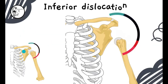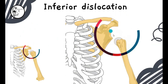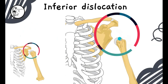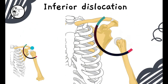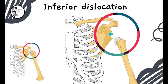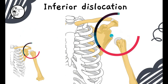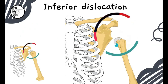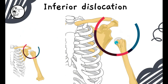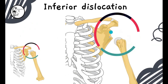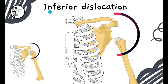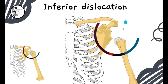In the illustrative diagram, the humerus head should have been in its actual location — as shown in the smaller picture — but following a blow to the shoulder joint or a sudden fall, the head of the humerus has been pushed downwards. That dislodgement of the humerus head constitutes inferior dislocation of the shoulder joint.